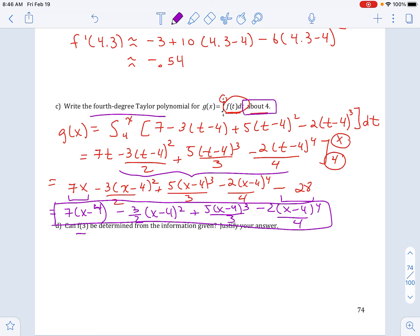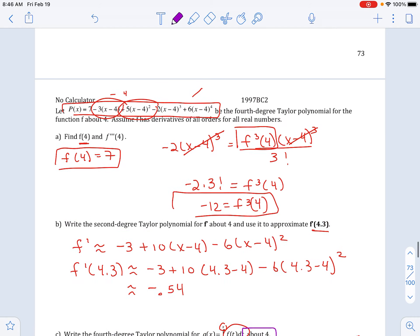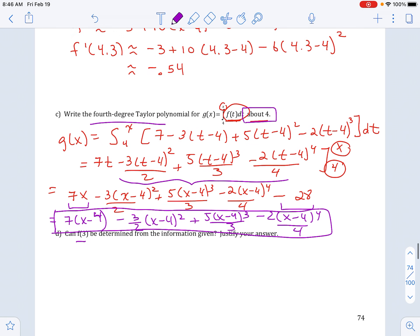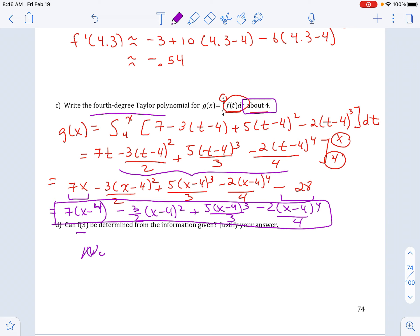And the last question, can f of 3 be determined from the information that's given? So the only thing we have is this polynomial here. And the answer is no. We can only find information about f of 4 or f prime of 4, because it is centered at 4. We can only find approximations for f of 3. And the reason is because this function is centered at 4. If it was centered at 3, then we could pull that information.